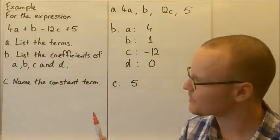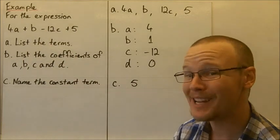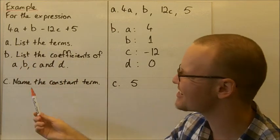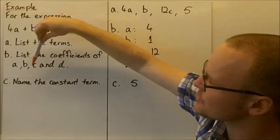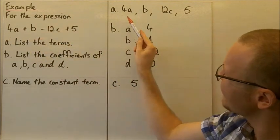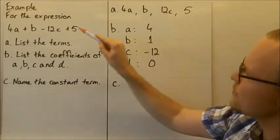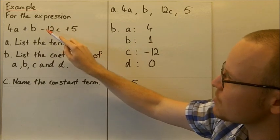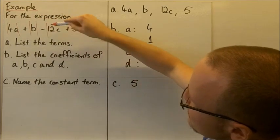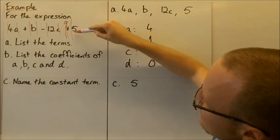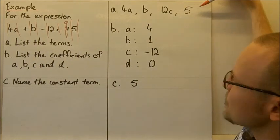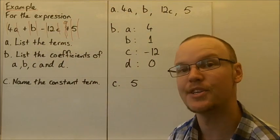Let's look at a quick example. Here's an expression: 4a plus b minus 12c plus 5. Let's list the terms, list the coefficients, and name the constant term. The terms in this expression are 4a, b, 12c, and 5 — separated out from the additions and subtractions. So 4a is a term, b is a term, 12c is a term, and 5 is a term.